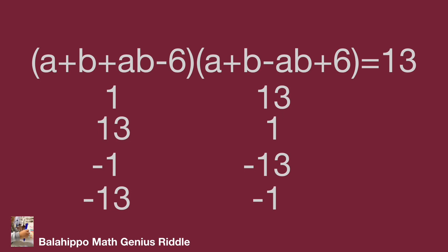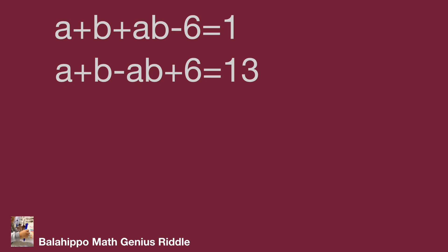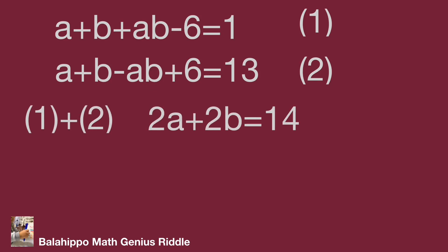Firstly, when a + b + ab - 6 = 1 (equation 1), and a + b - ab + 6 = 13 (equation 2). Adding equation 1 and equation 2, we get 2a + 2b = 14, so a + b = 7.